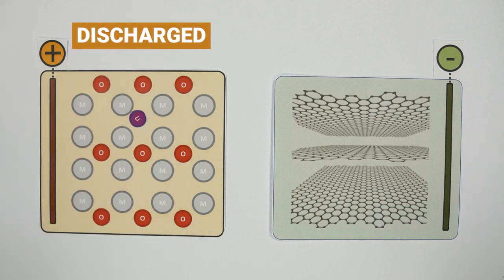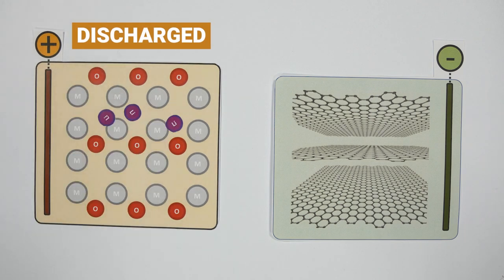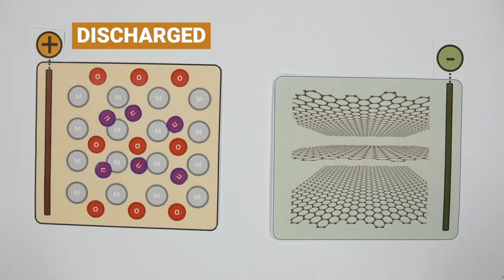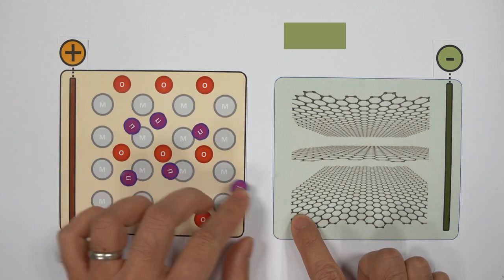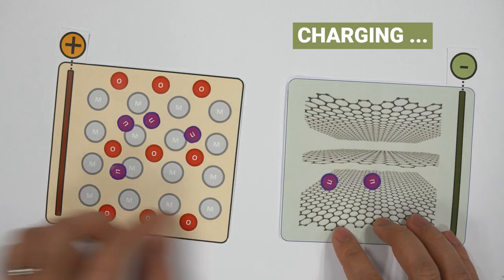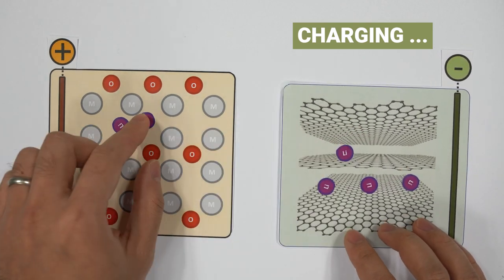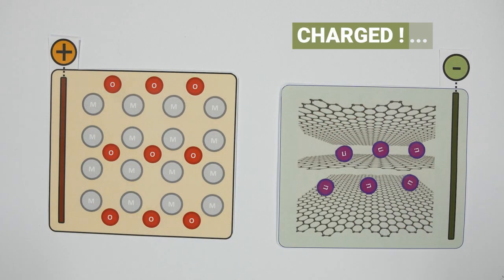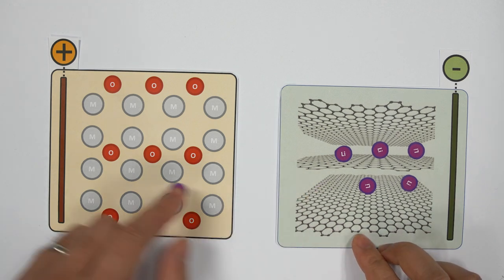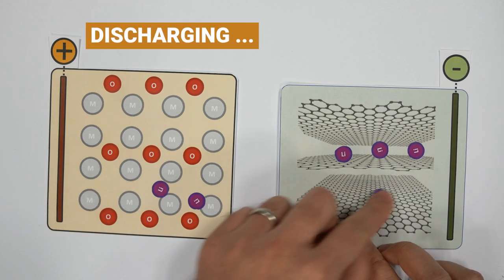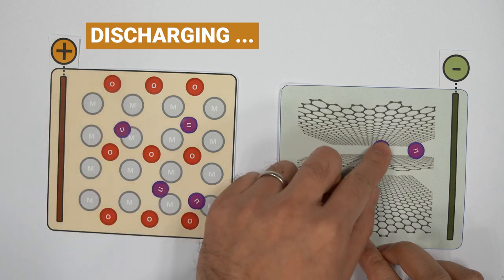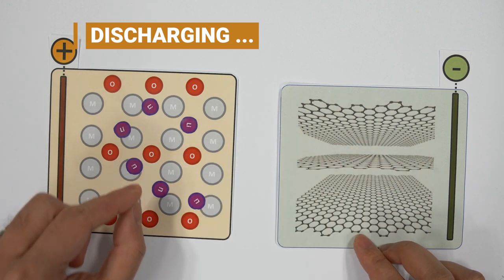If the battery is already discharged, the lithium resides in the metal oxide. Now, when we apply a current and the battery charges, the lithium migrates through the electrolyte into the graphite, a process that is called intercalation. If the battery is charged and we are using it, the lithium is released from the graphite and migrates into the metal oxide.